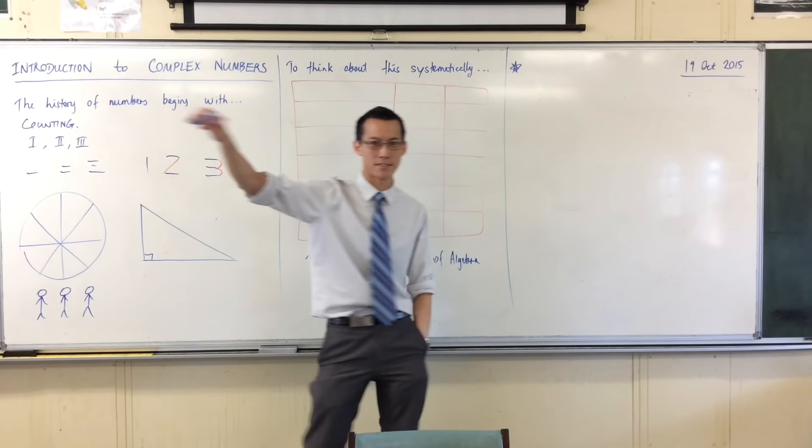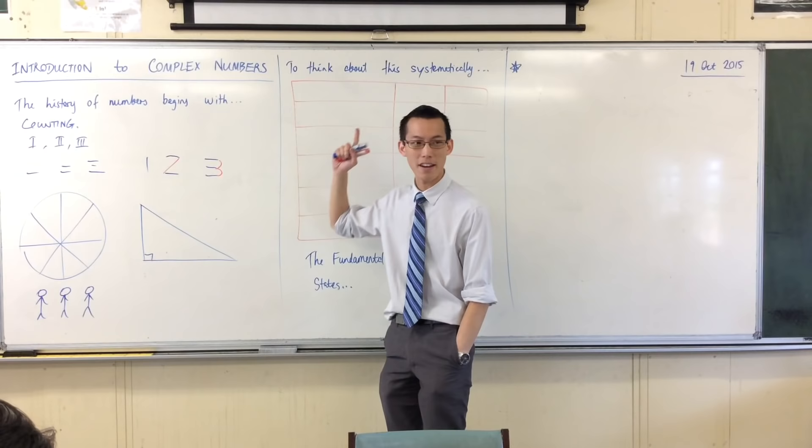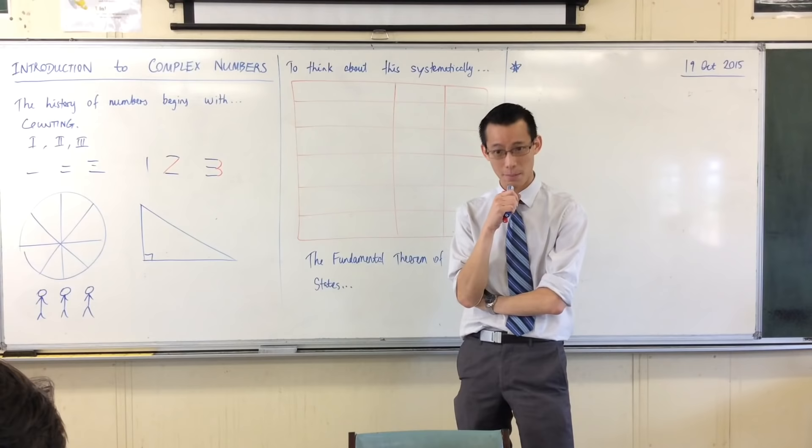Now, here's the problem though. You remember I said numbers begin with counting. But very rapidly, numbers do not end there. In fact, if you take these numbers, we call them the natural numbers or the counting numbers, it's pretty obvious to see that the natural numbers are not the only kinds of numbers. The counting numbers sort of give rise to all these other kinds of numbers.